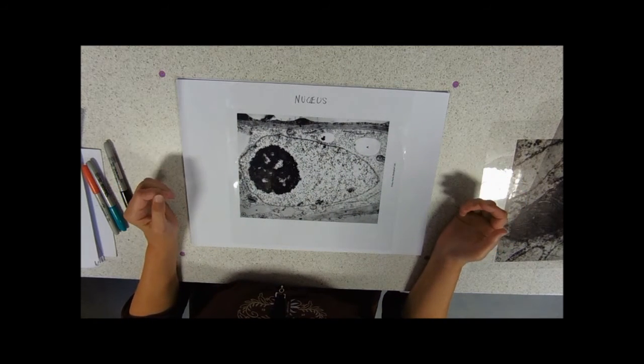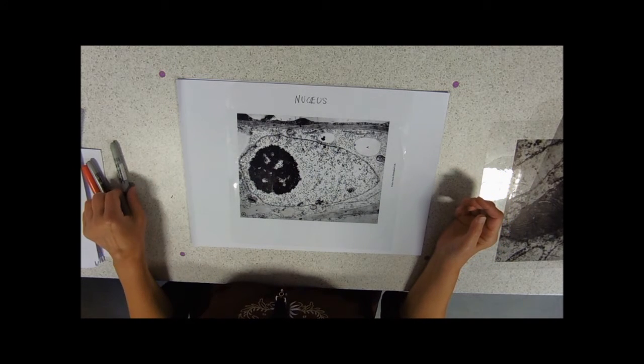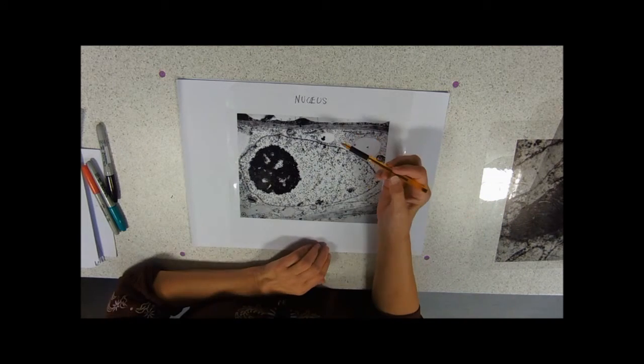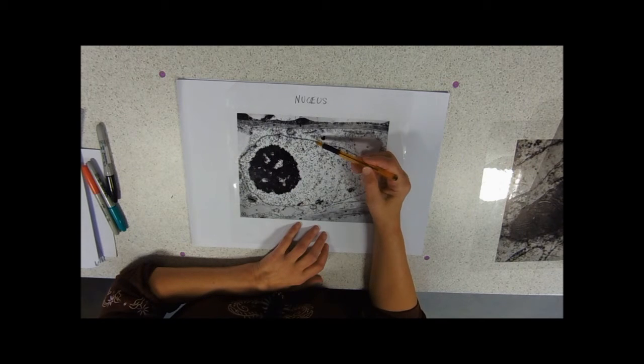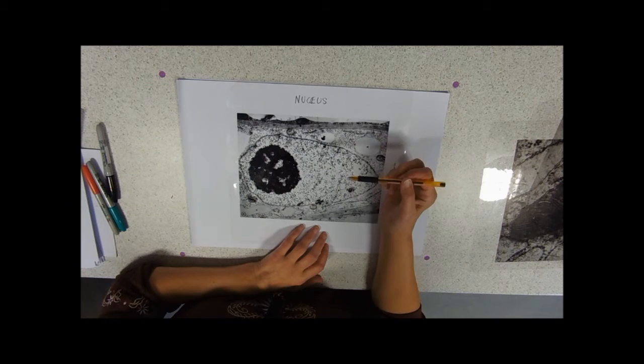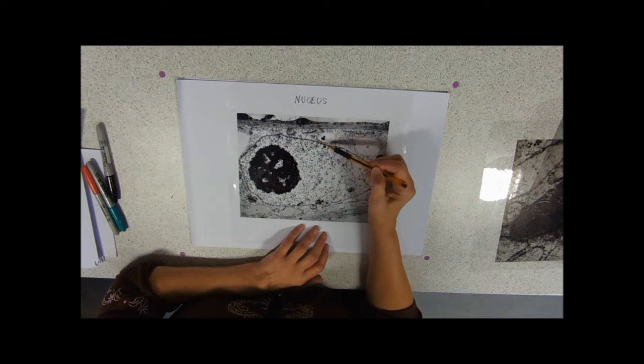So the nucleus is surrounded by a double membrane. If you look closely you can see a membrane there and a membrane there. So these nuclei have double membranes, and every so often that membrane is pierced—it seems to have a gap in it.